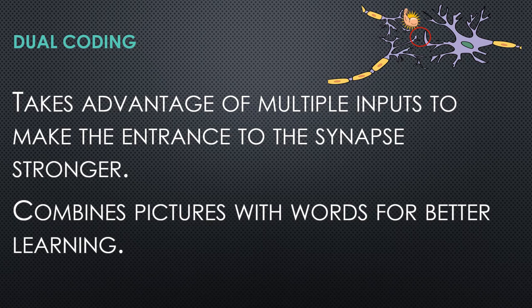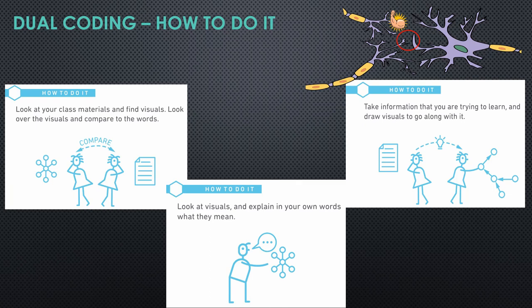We're going to focus on combining pictures with words for better learning. If your class material has been mainly word-based, go and look for visuals that work with those words and compare them. For example, if you've been learning about the Colosseum in Roman history, go look at pictures of it to go along with those words. Vice versa: if you've been using visuals as your main medium, try and explain those visuals in words. And if you're trying to learn lists or a method in science, convert that method from words into picture form, to give yourself more than one medium to remember the information.